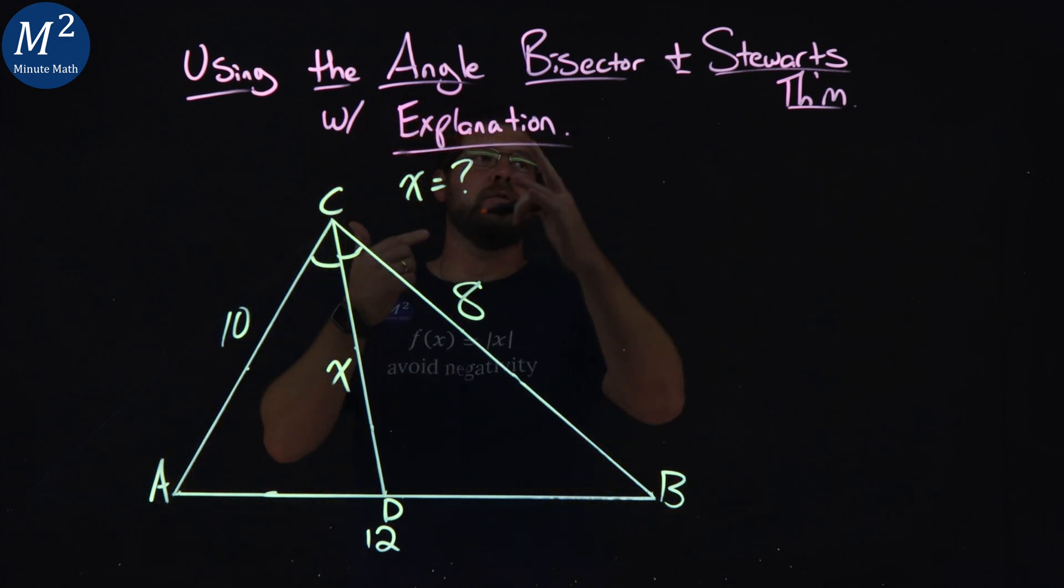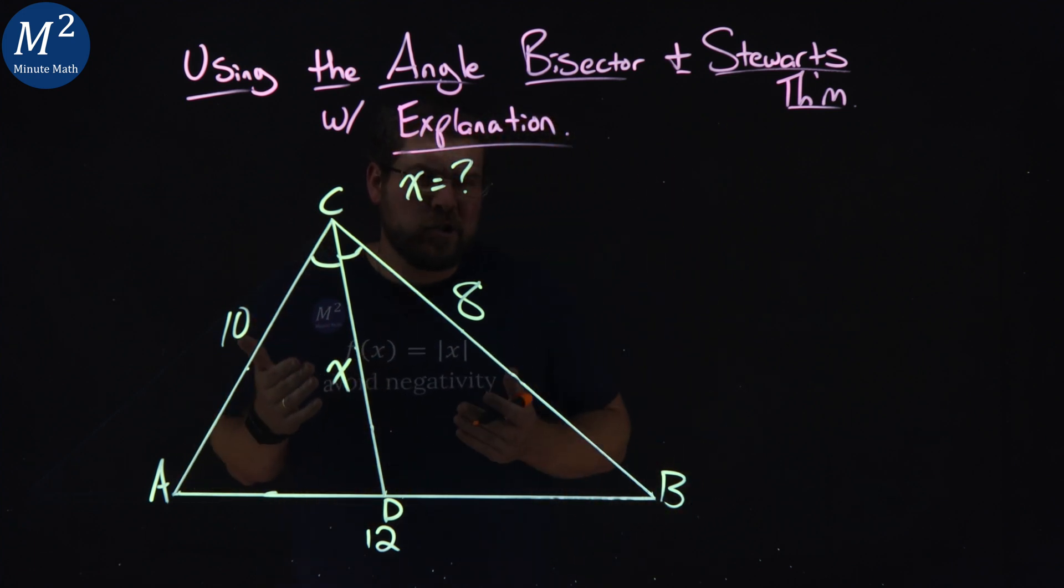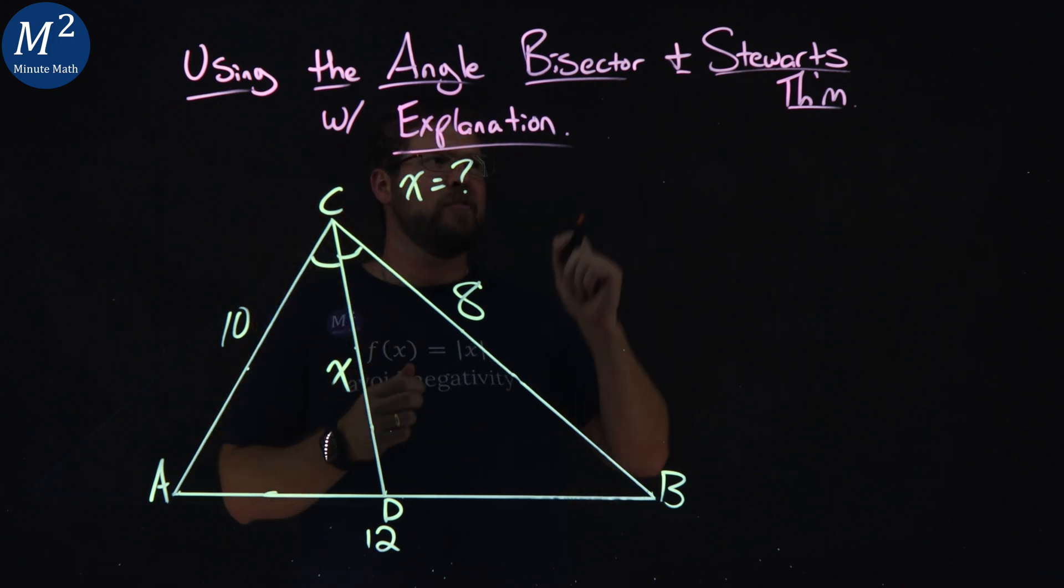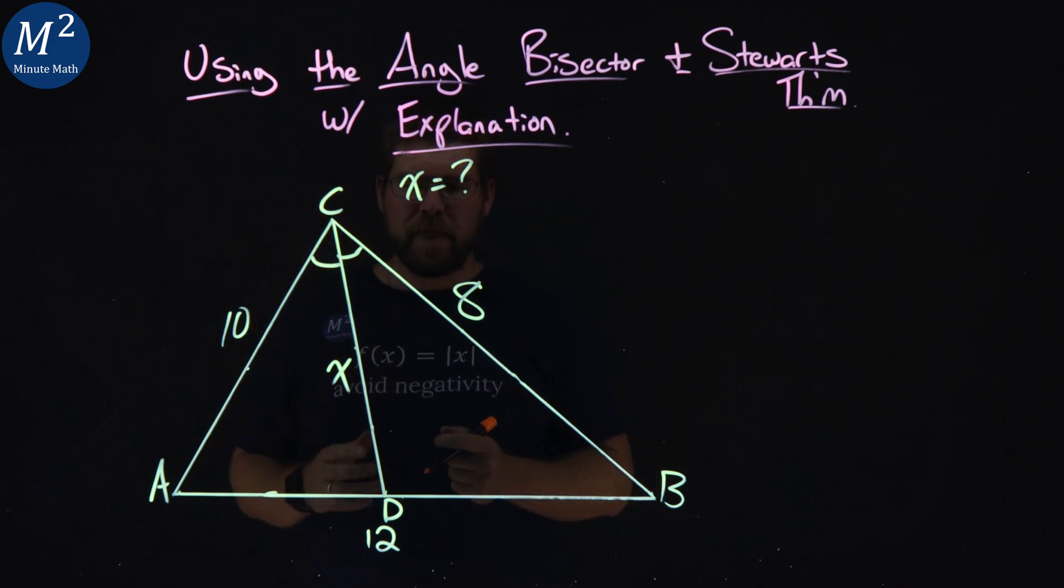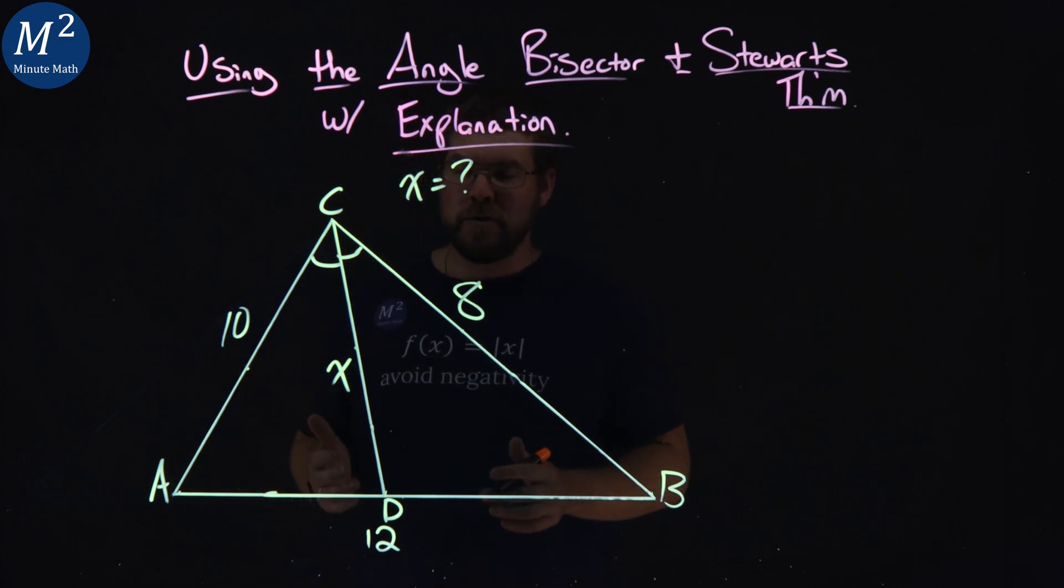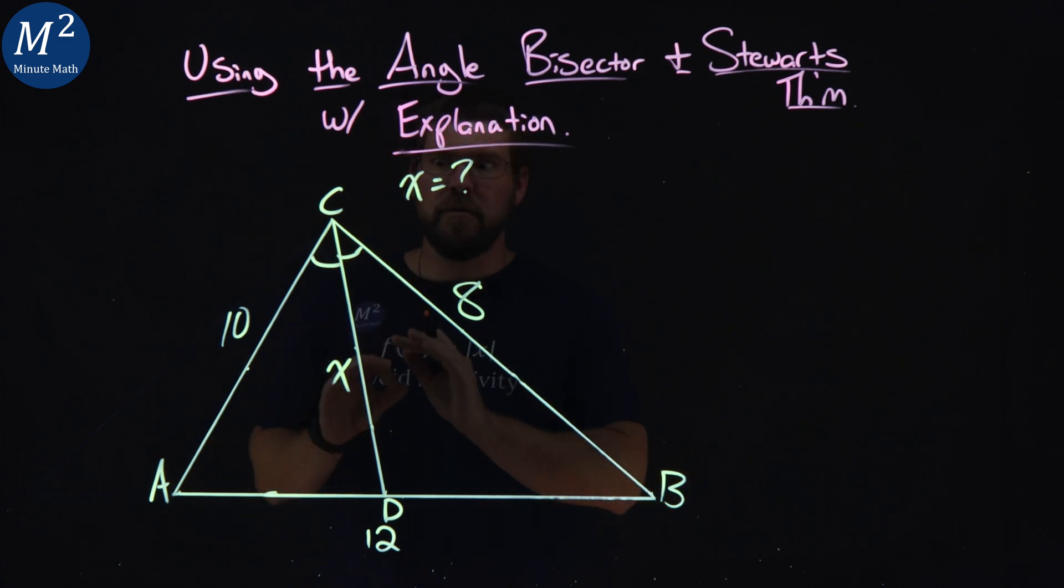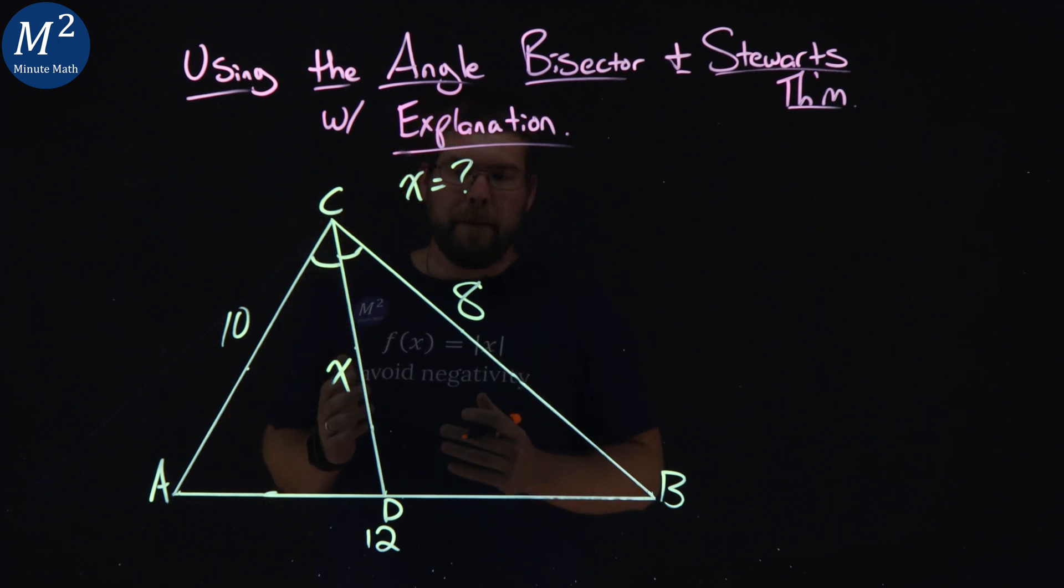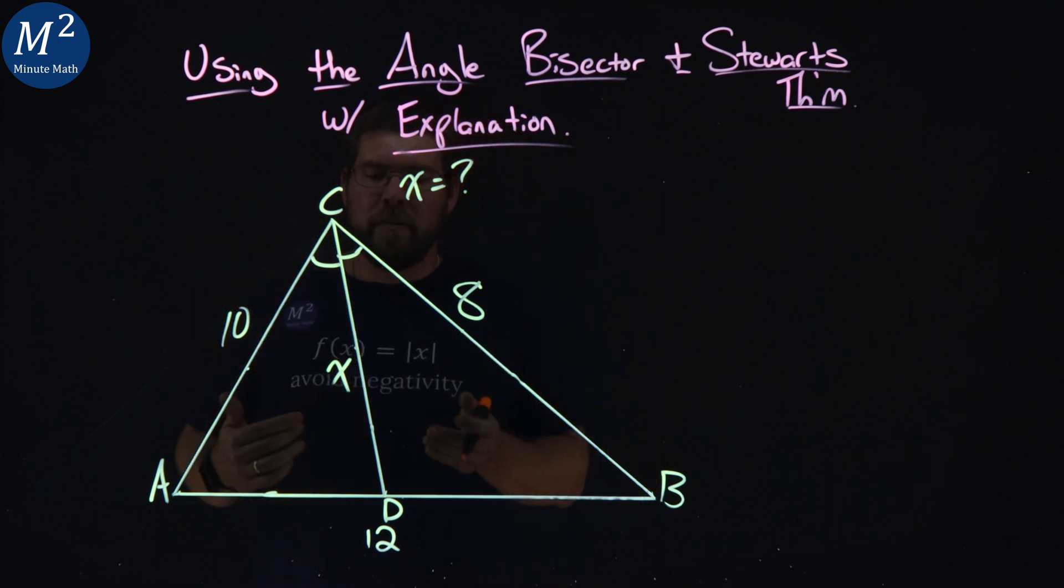With this information using these two theorems, we're going to show you how to find x here and give a good explanation of the angle bisector and Stewart's theorem. But like always, we encourage you to pause this video to see if you can solve for x first, look up these theorems and see how they can help you. But we're going to go through an explanation of them here and solve for x.